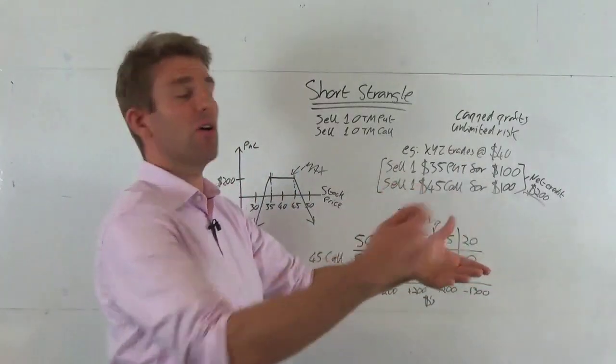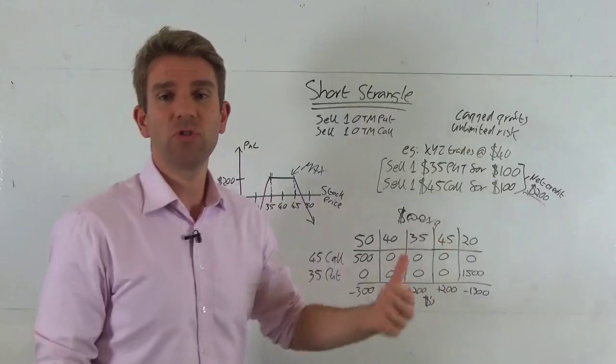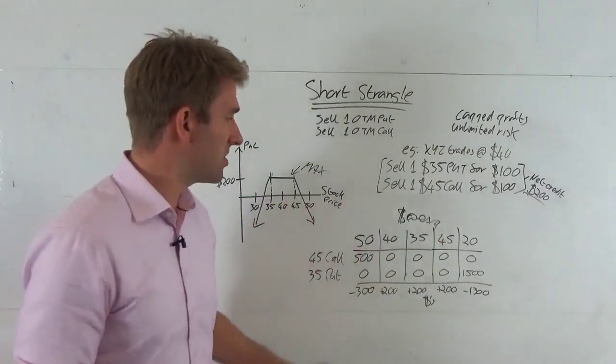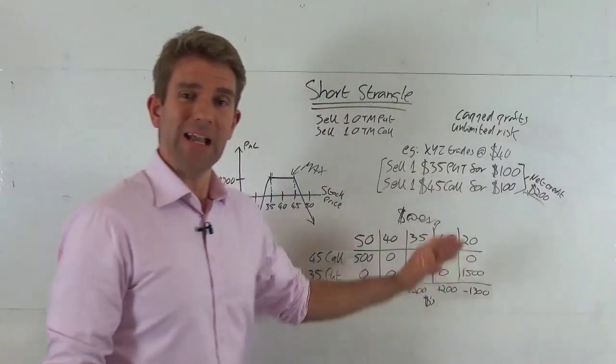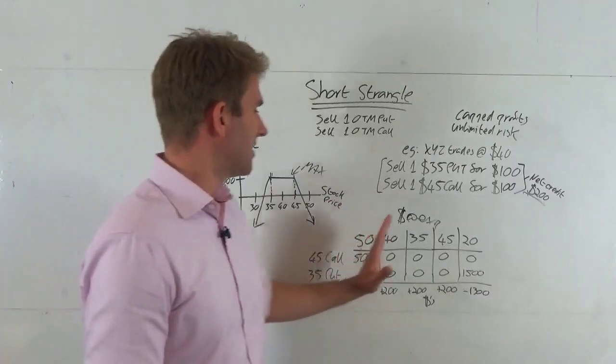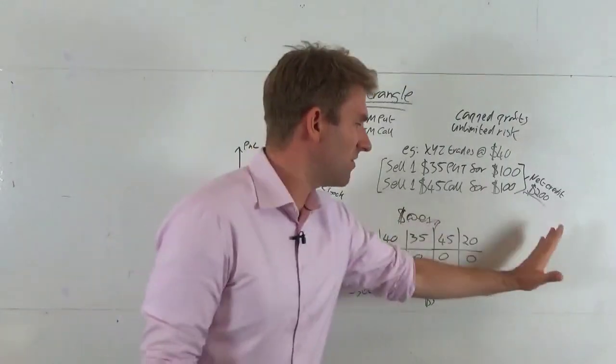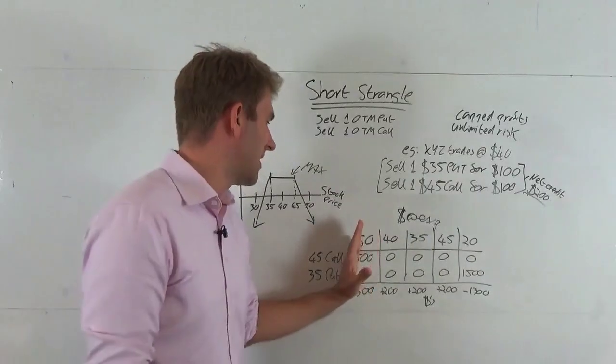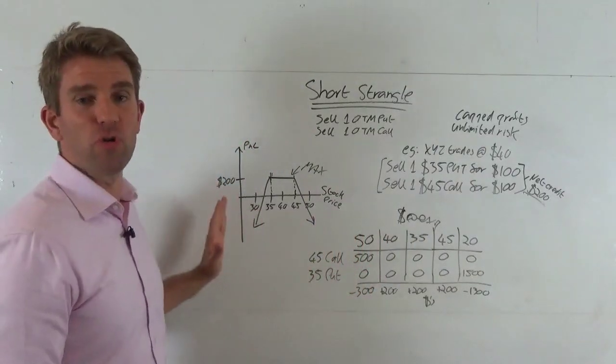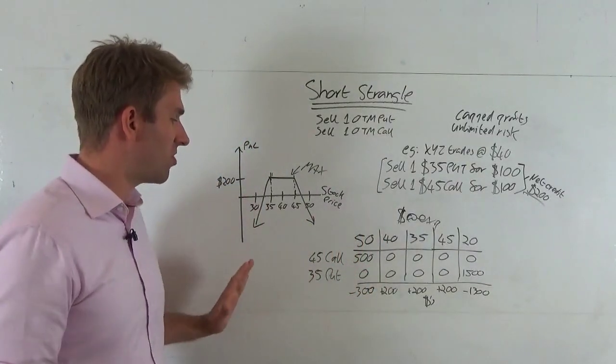So it's not quite unlimited to the downside. If we went even further the most we could go is zero. Where the danger could come in is if this stock trebled or quadrupled and we started talking $100, $200, of course that call is going to be more and more and more valuable and the put will stay at zero and that's where the loss could come in.